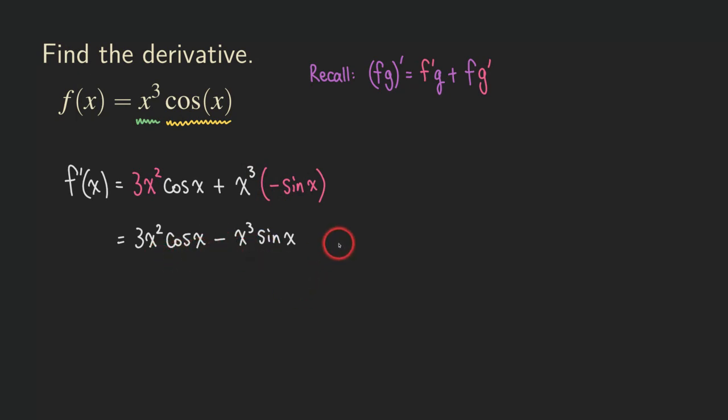And then you can also factor out the common factor from both terms, which is x squared. And so you have just 3 cosine x minus x sine x in the parentheses. But it's up to you whether you want to do this extra step. We can actually just take that as the answer.